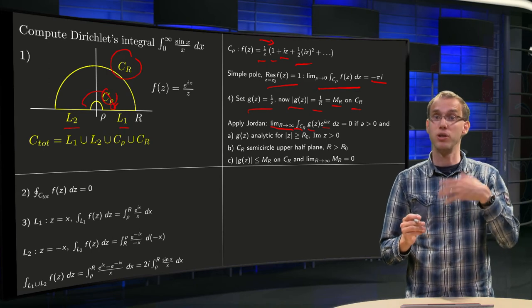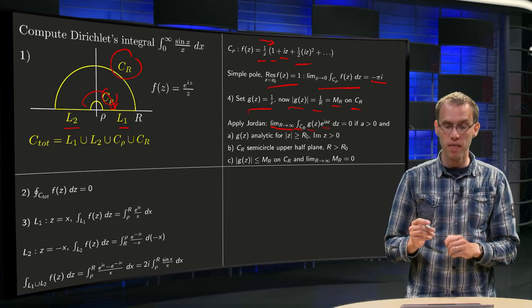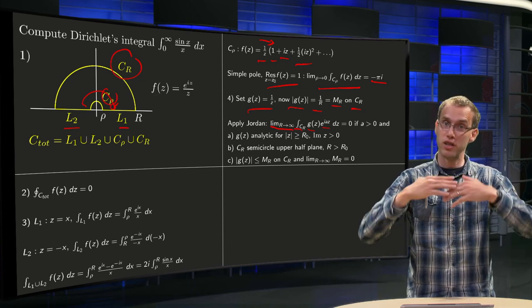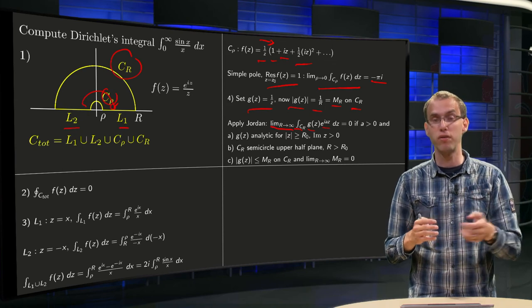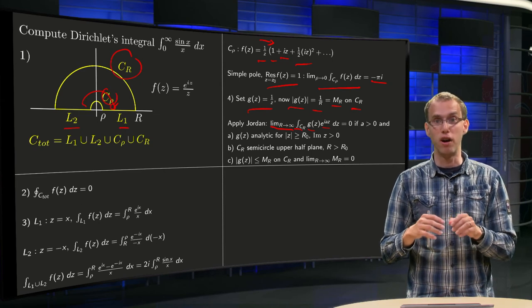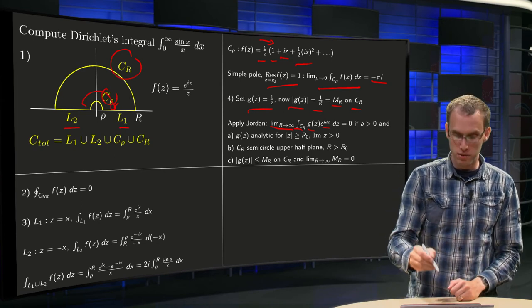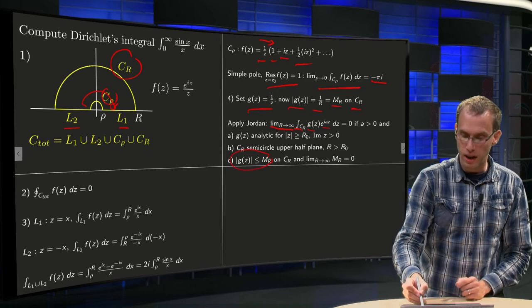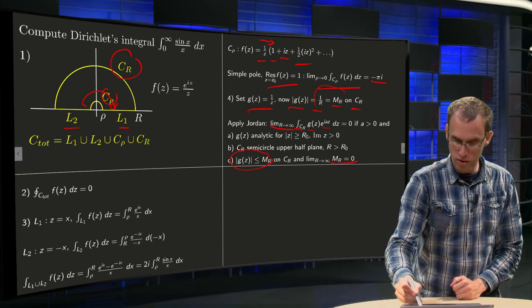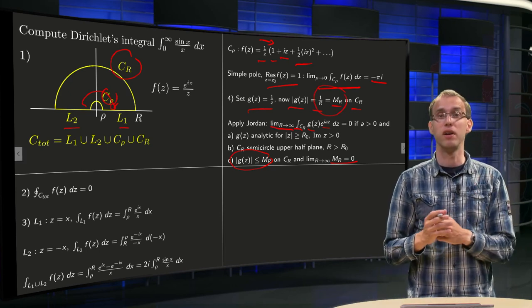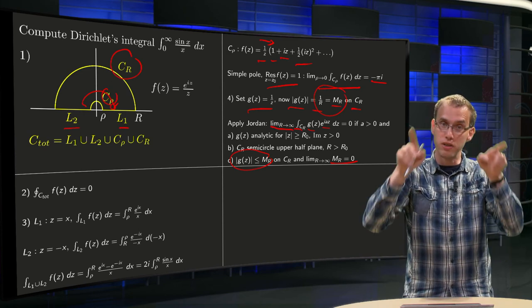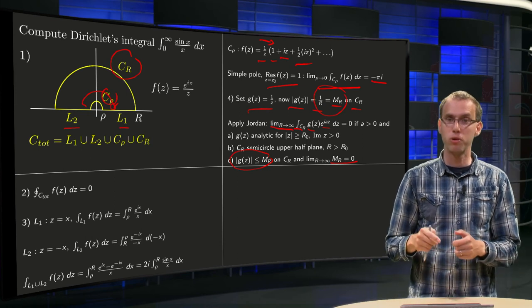We also need g(z) to be analytic for a set big enough. Well, g(z) equals 1 over z, so that's fine. CR needs to be a semicircle on the upper half plane. That's fine as well. g(z) needs to be bounded by MR, and the limit R to infinity of MR needs to be 0. Well, MR equals 1 over R. If R to infinity, this limit equals 0. We can apply Jordan's lemma and the integral along CR vanishes.